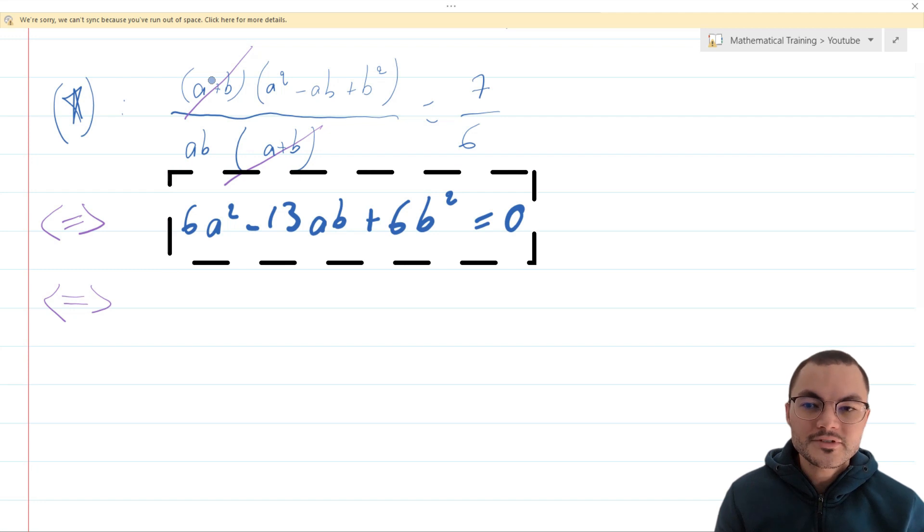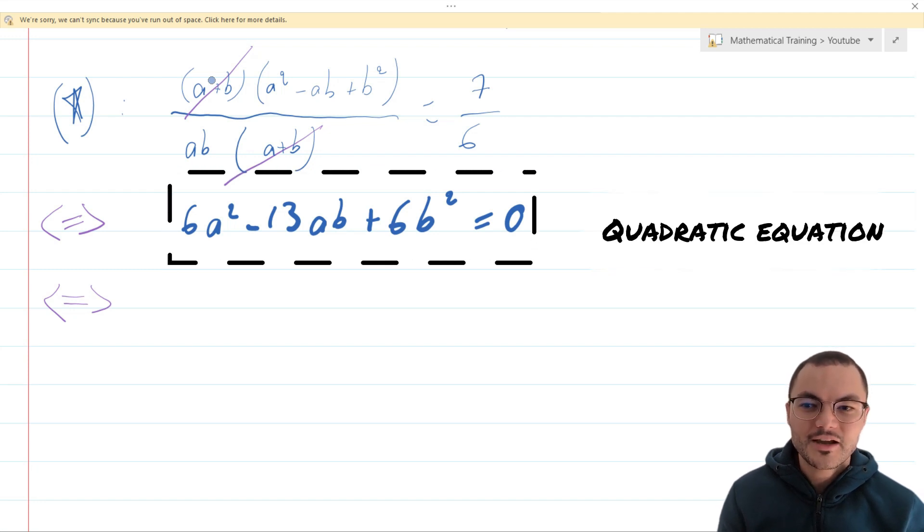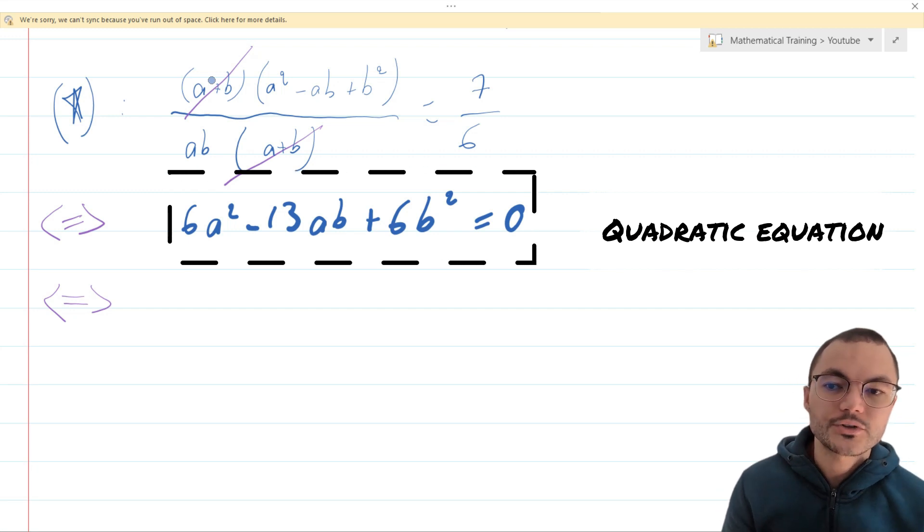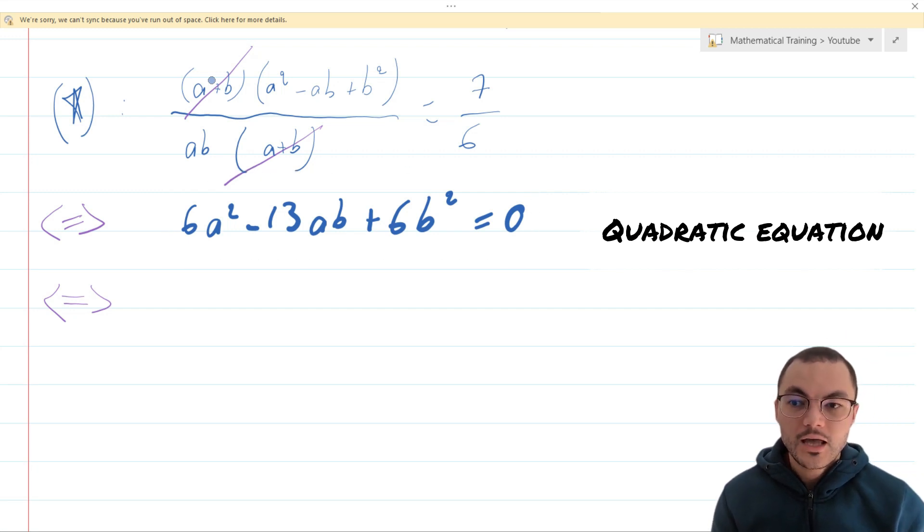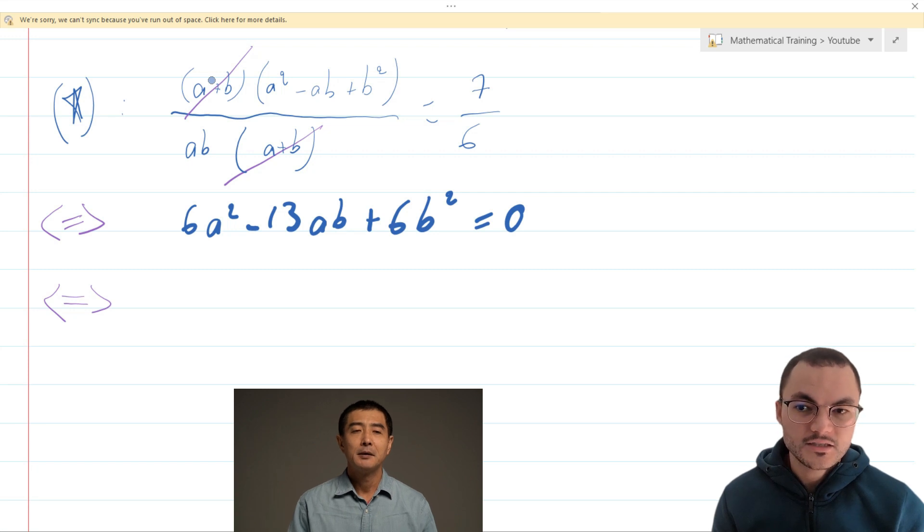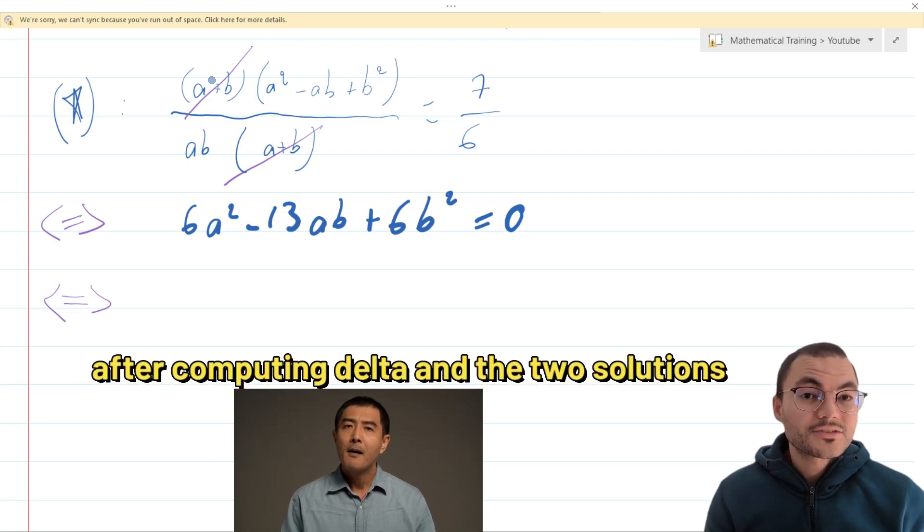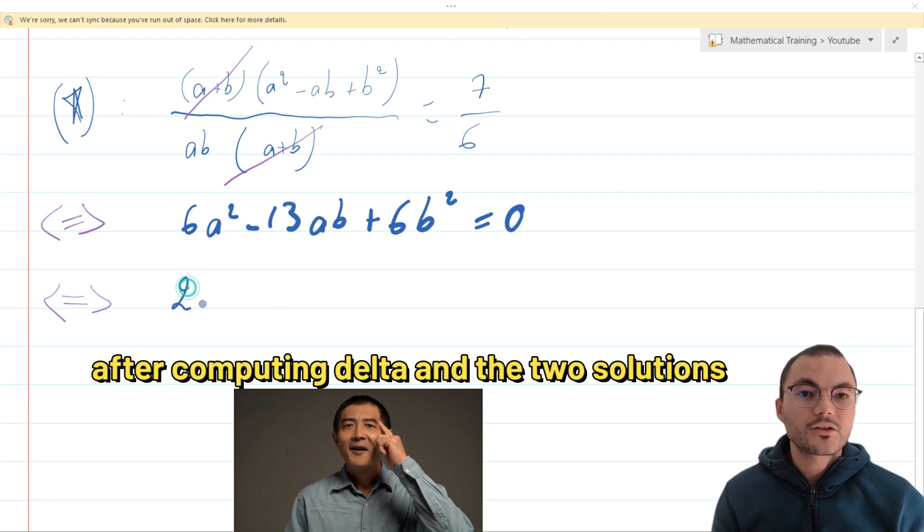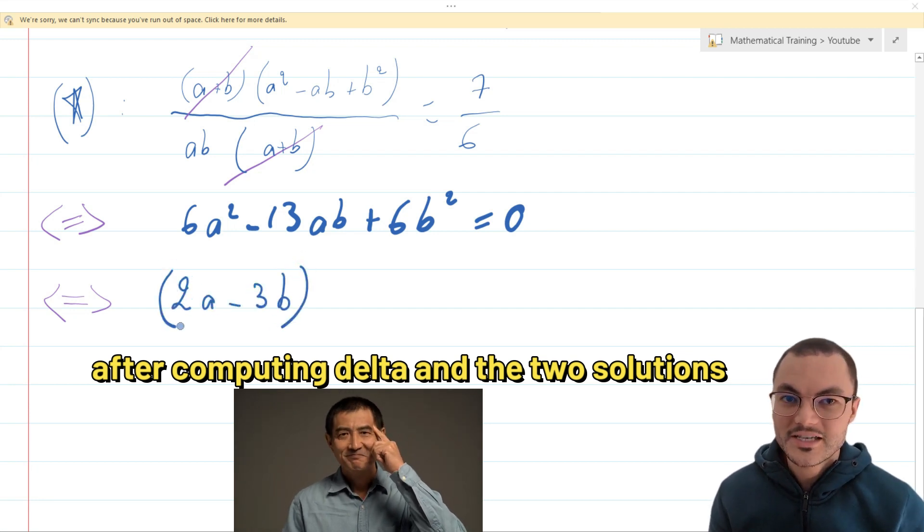Given that all numbers involved in this equation are integers, factoring can be a useful approach. We can treat the equation as a quadratic in terms of a as the unknown variable and b as a fixed constant. By calculating the discriminant delta and determining the first and second solutions we can arrive at the following factorization.